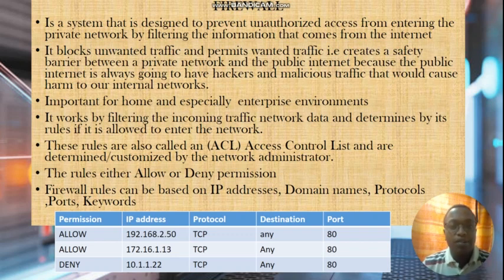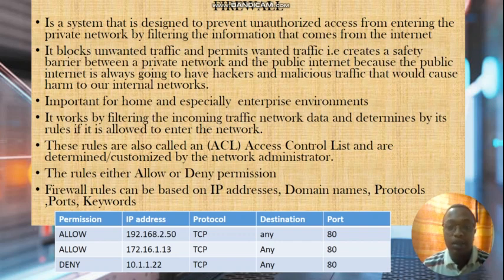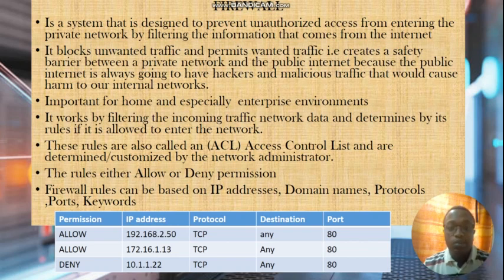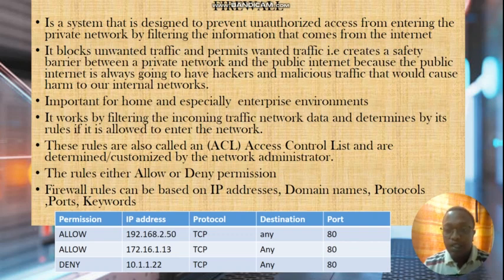A firewall basically works by filtering incoming traffic and determining by its rules — which are customized by the network administrator — whether that traffic is allowed to enter the network or not. These rules are called access control lists. Access control list rules either allow or deny permission for traffic to enter our networks, and firewall rules can be based on IP addresses, domain names, protocols, ports, and keywords.